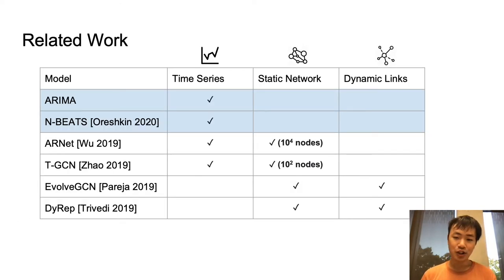And looking at the existing literature, the first thing to note is that time series forecasting itself is a well-established task. ARIMA is usually the standard statistical baseline that everyone is trying to compare against. More recently, a fully neural forecasting model called NBEATS was able to perform extremely well in benchmark datasets. However, these models cannot be easily applied when you have the additional graph structure.